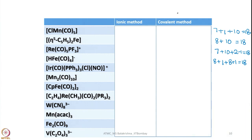Now consider the iridium complex: iridium gives 9 electrons, CO gives 2, three triphenylphosphines give 6, one chloride gives 1, and NO is present with a +1 charge. If NO is counted as a 3-electron donor, you get 20 electrons — which is incorrect. So NO must be giving only 1 electron here. This confusion will be addressed when we go to the ionic method.